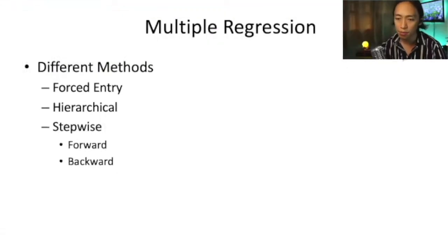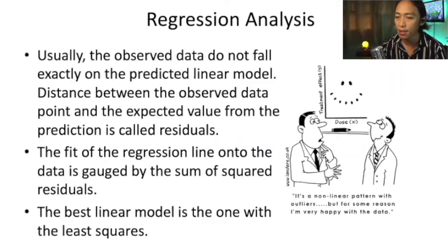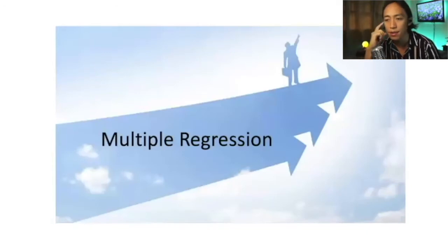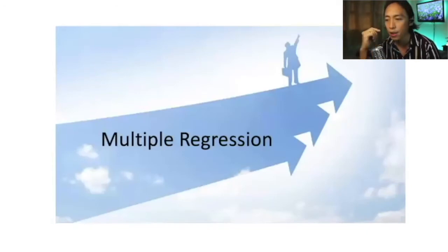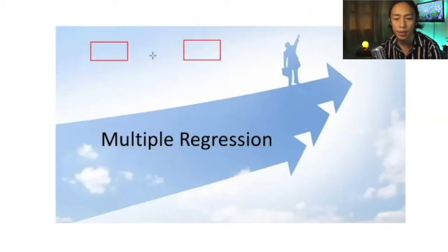When we talk about multiple regression, it is basically the same as linear regression. The only difference is that in linear regression, we are dealing with a simple model wherein we have one independent variable and one dependent variable, with a hypothesis suggesting that the independent variable has an impact on the dependent variable.